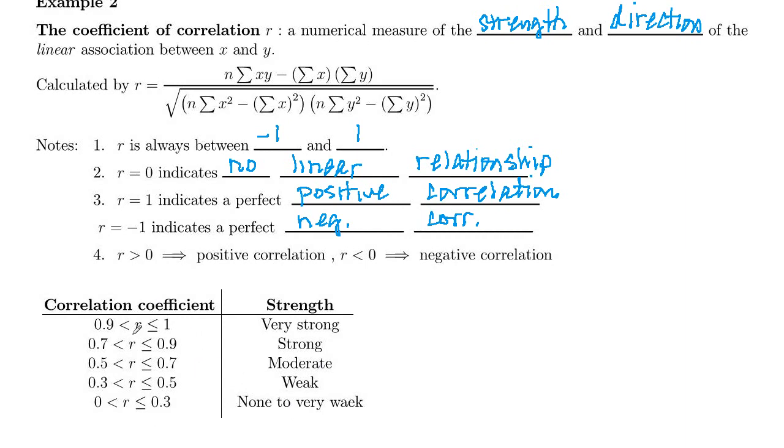So if your R value is between 0.9 and 1, that's going to be a very strong positive correlation. Between 0.7 and 0.9, strong correlation. 0.5 and 0.7, moderate correlation. 0.3 and 0.5, weak correlation. And 0 to 0.3, none to very weak positive correlation.